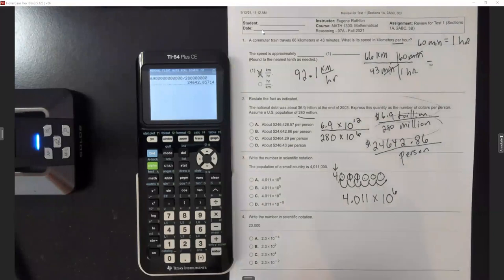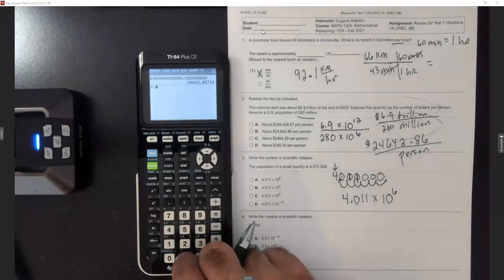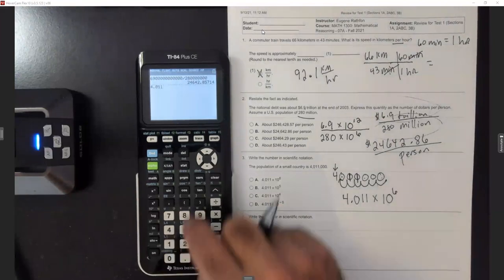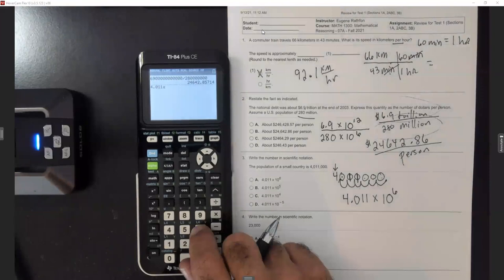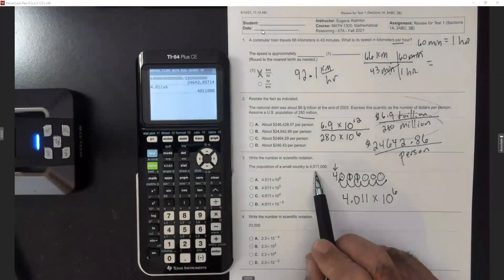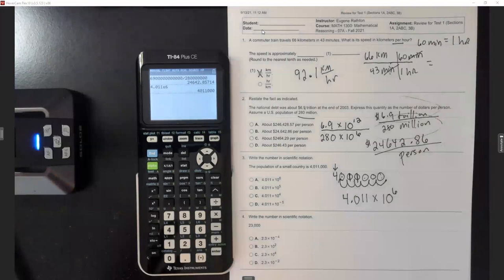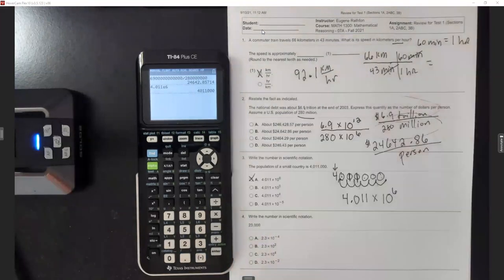So we have 4.011 — second E, exponent 6 — if you hit enter you get 4,011,000. All the other answer choices give you wrong answers if you punch them in, so we go with A.